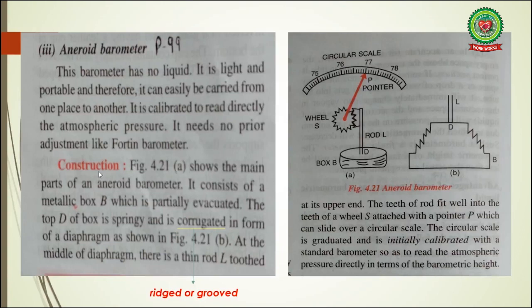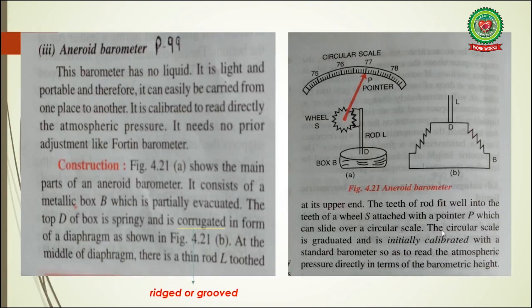Construction, figure 4.21a. This figure shows the main parts of the aneroid barometer. It consists of a metallic box B which is partially evacuated. The top D of the box is springy and is corrugated in the form of a diaphragm — corrugated means twisted or grooved — as shown in figure 4.21b. At the middle of the diaphragm there is a thin rod L toothed at its upper end. The teeth of the rod fit well into the teeth of a wheel S attached with the pointer P, which can slide over a circular scale. The circular scale is graduated and initially calibrated with the standard barometer so as to read the atmospheric pressure directly in terms of barometric height.